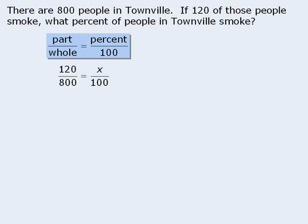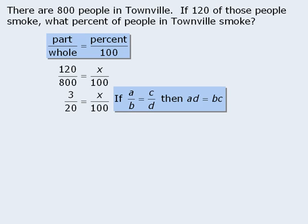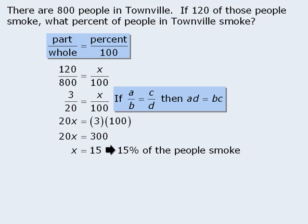At this point, we have an equation we can solve for x. Let's take our fraction, 120 over 800, and simplify it by dividing top and bottom by 40 to get 3 over 20. From here, we can apply the rule and cross-multiply. Next we simplify the right-hand side and divide both sides by 20 to get x equals 15. Since x represents the percent, 15 percent of the people in Townville smoke.